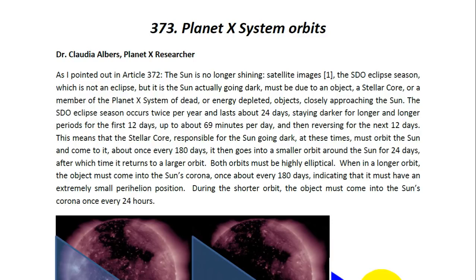As I pointed out in Article 372 entitled 'The Sun is No Longer Shining,' satellite images show the STO eclipse season, which is not an eclipse, but the sun actually going dark. This must be due to an object — a stellar core or a member of the Planet X system of dead or energy-depleted objects — closely approaching the sun.